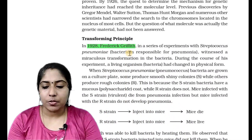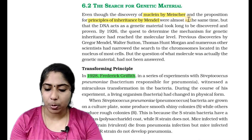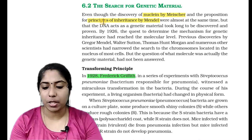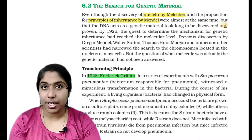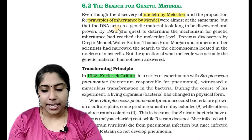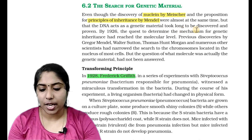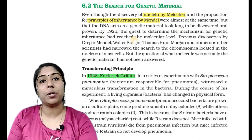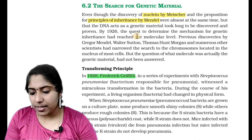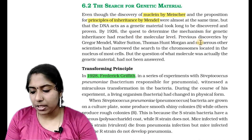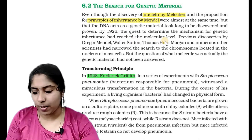The search for genetic material — even though the discovery of Nuclein by Miescher and the proposition of the principles of inheritance by Mendel were almost at the same time, the fact that DNA acts as the genetic material took long to be discovered and proven. By 1926, the question to determine the mechanism for genetic inheritance had reached the molecular level.